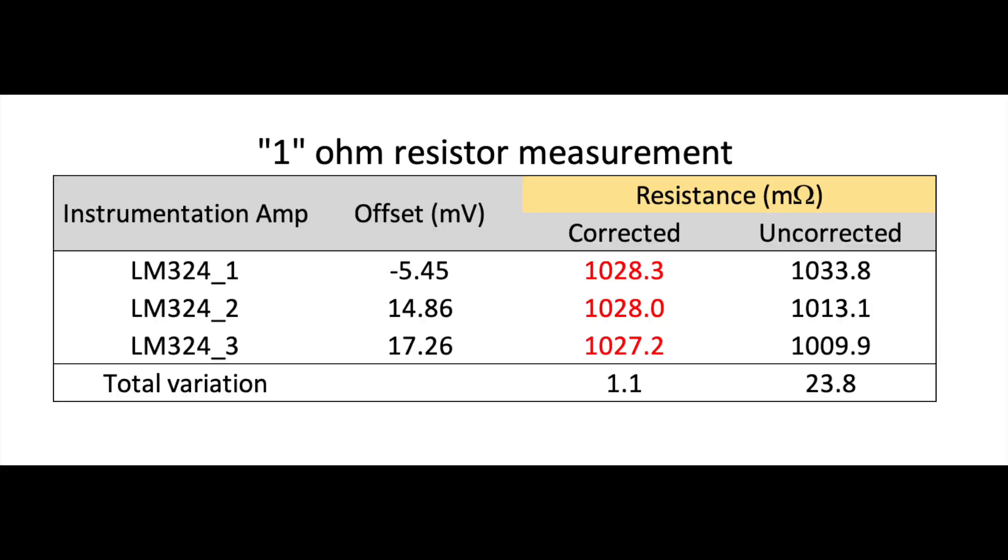So to conclude this video, I'm going to present data for three different LM324 chips. This time I'm measuring a 1 ohm resistor, so-called 1 ohm. It's not exactly 1, but I'm not interested in the actual value for this thing. It's just a relative measurement. So with the first one, I got minus 5.45 millivolt offset on that node at the output of the LTC1049. And that is the chip I'm currently using for my final device.